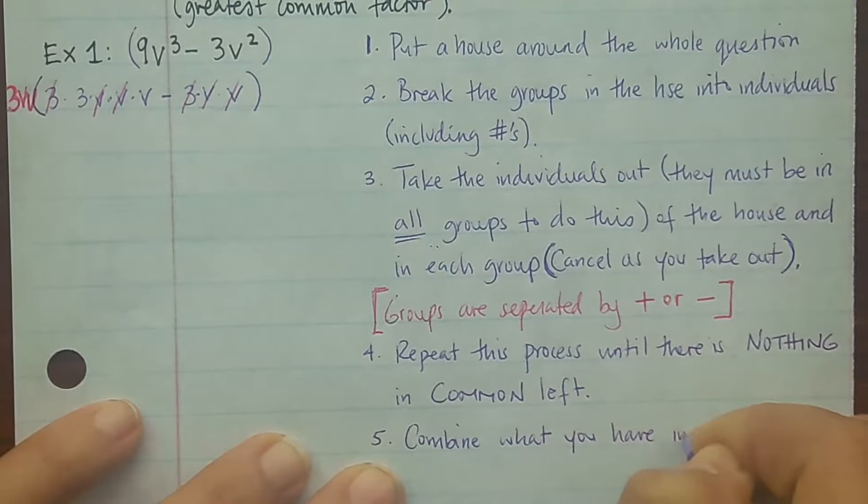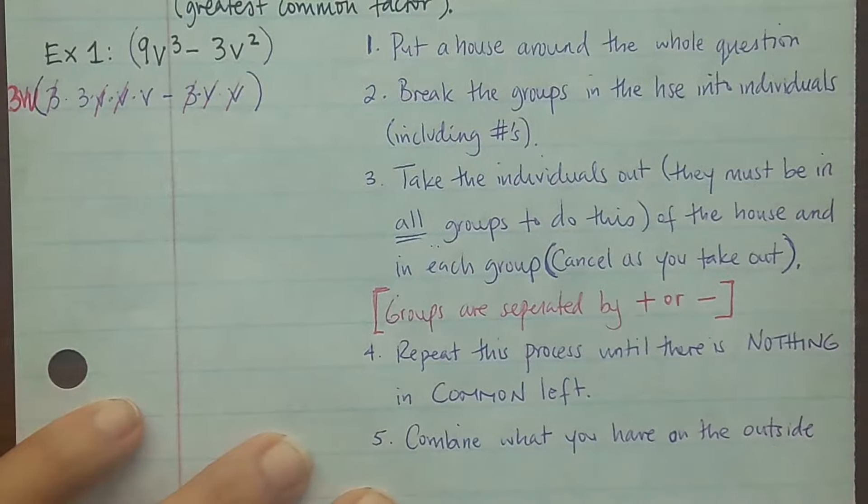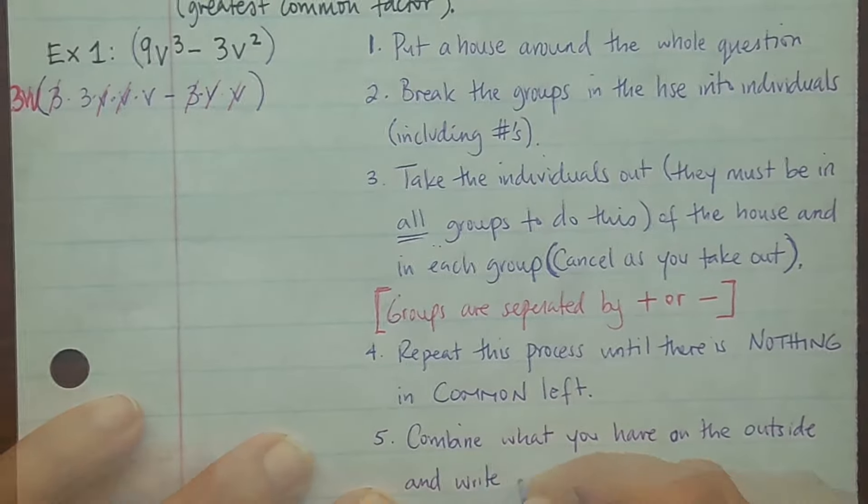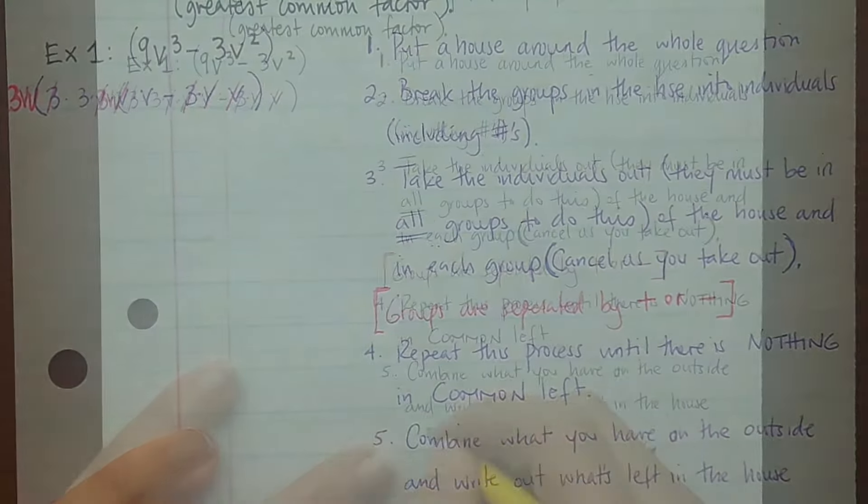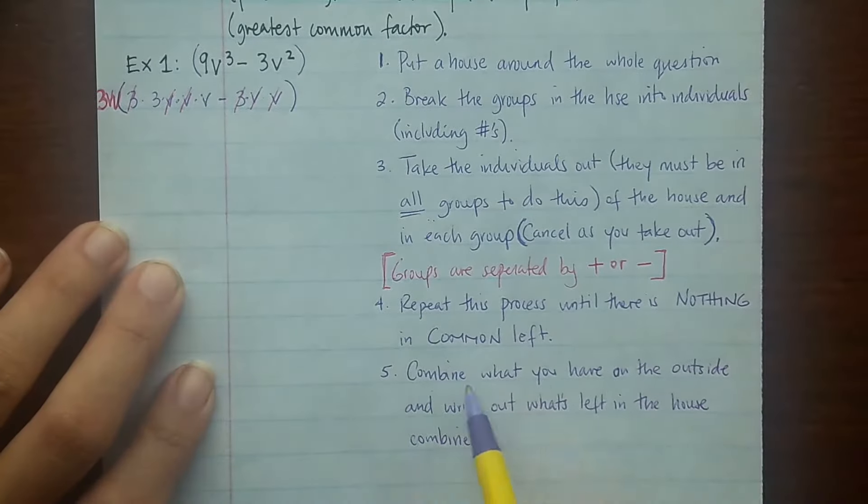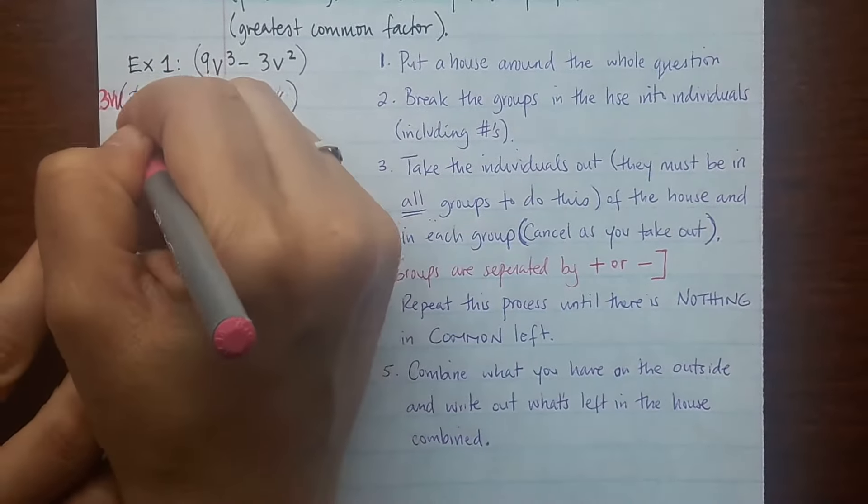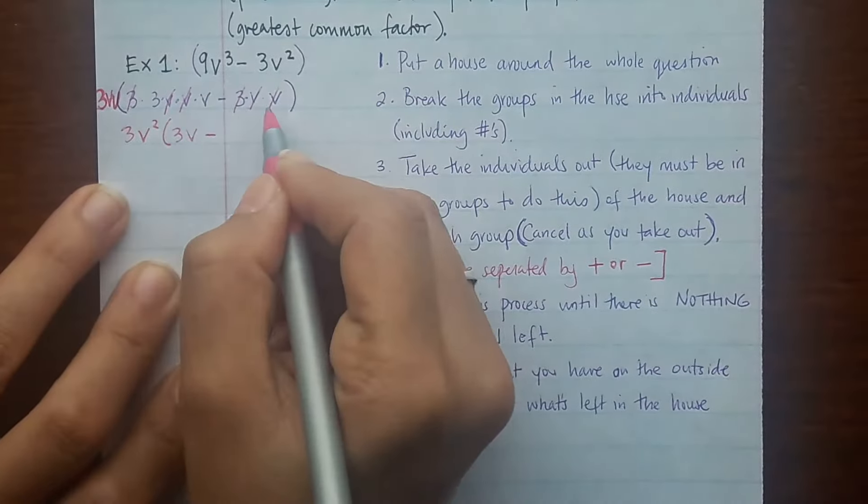Once you've done all that, combine what you have on the outside and write out what's left in the house combined. This is a listening check. Put a box around the word combine. Alright, so what do I have outside? I have 3 and I have 2v, so v². I combine it. Inside I have 3v minus 0.